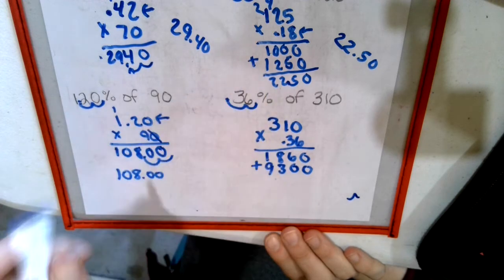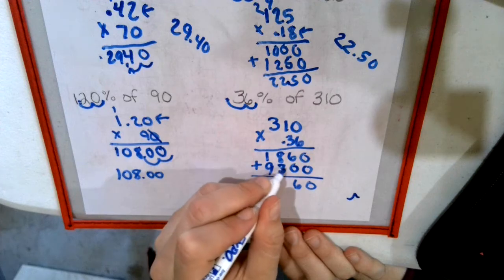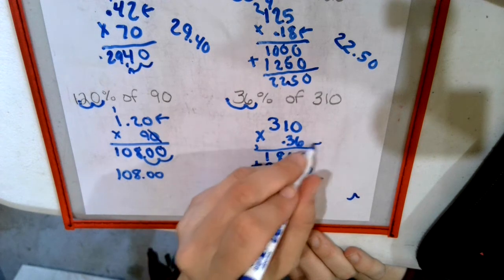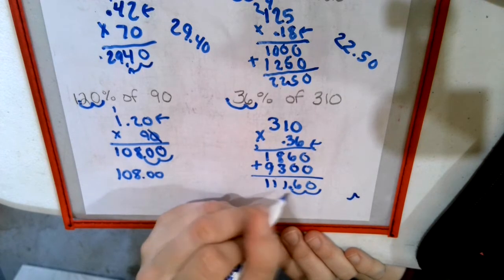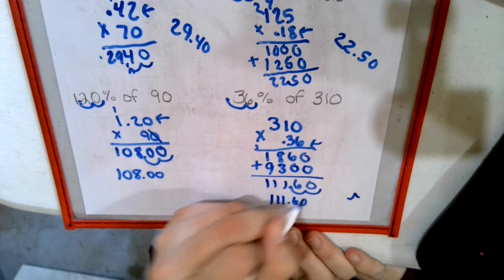Add. 8, 9, 10, 11. 9, 10, 11. Two numbers behind decimal points. We get 111 and 60 hundredths. Final answer.